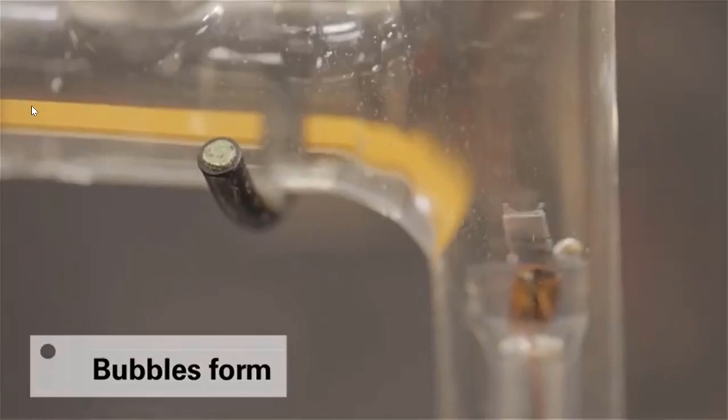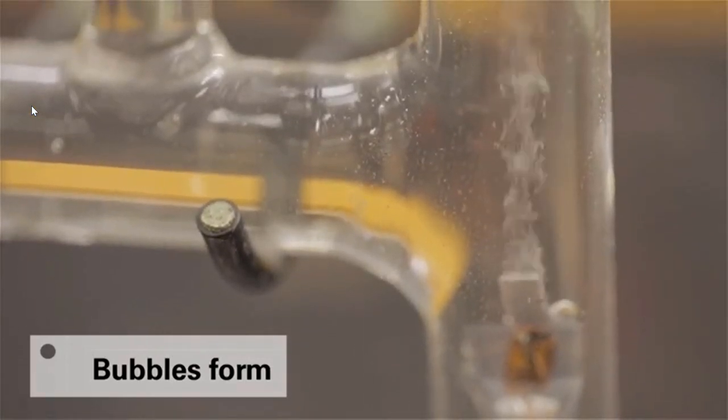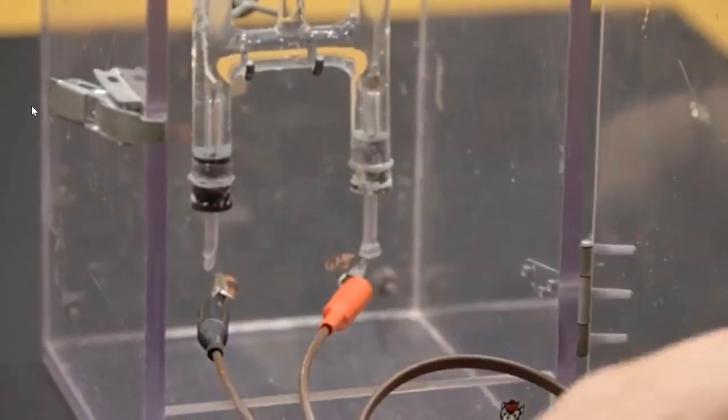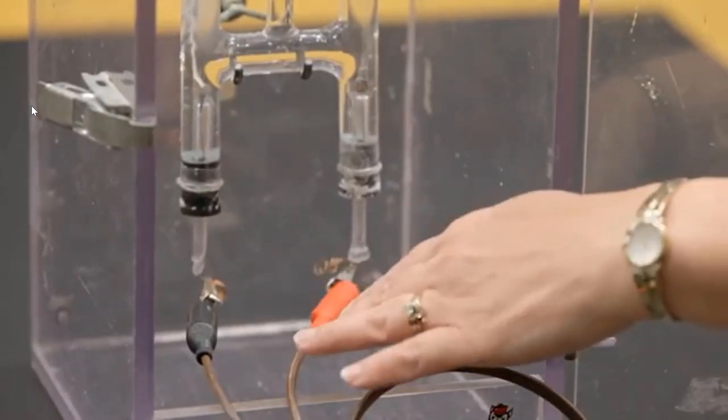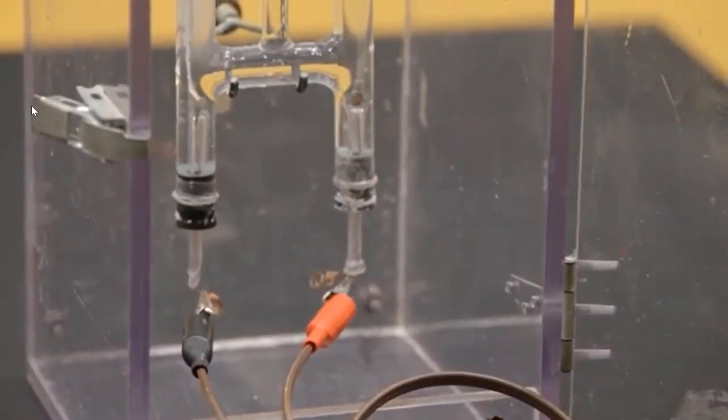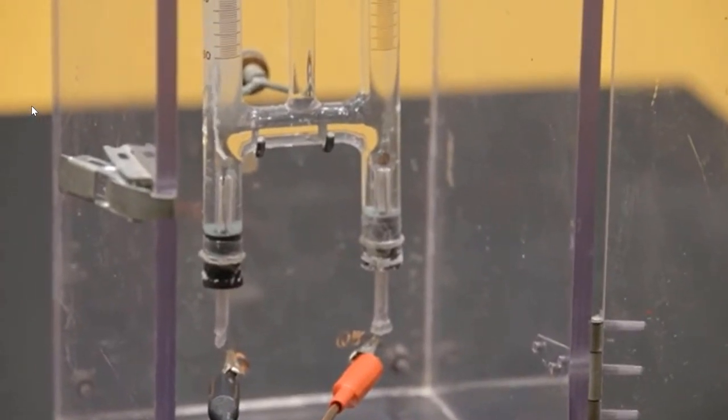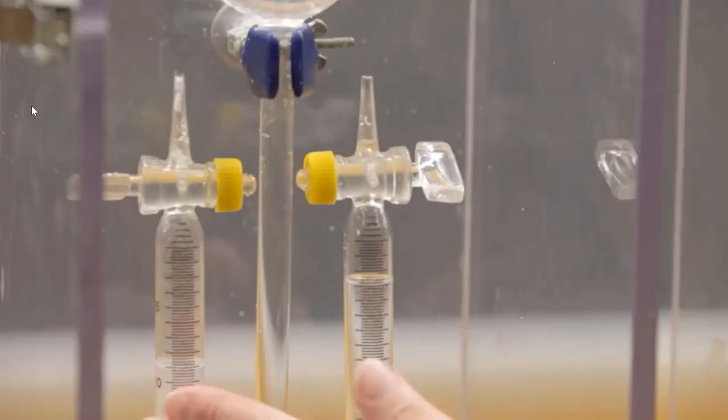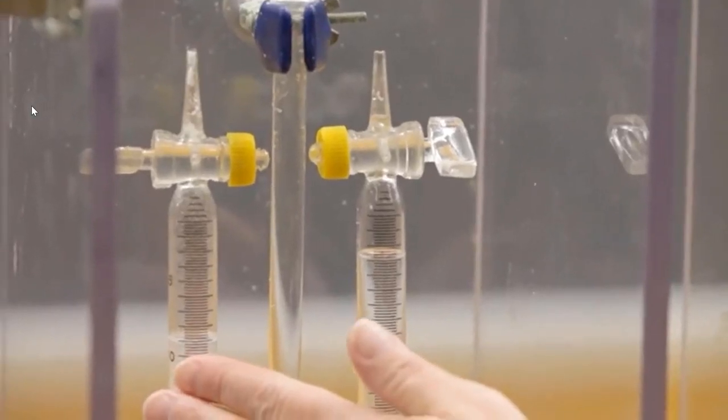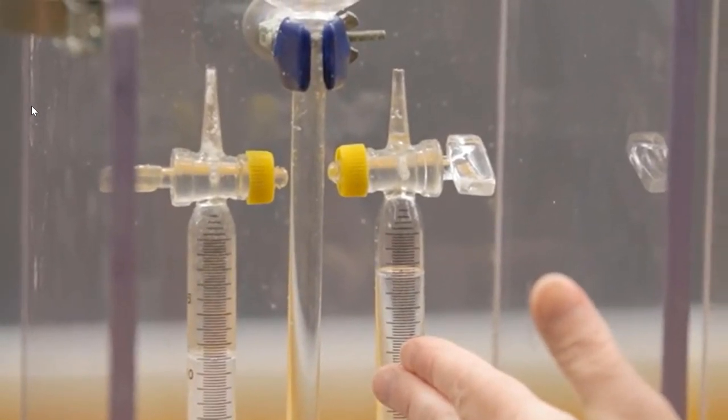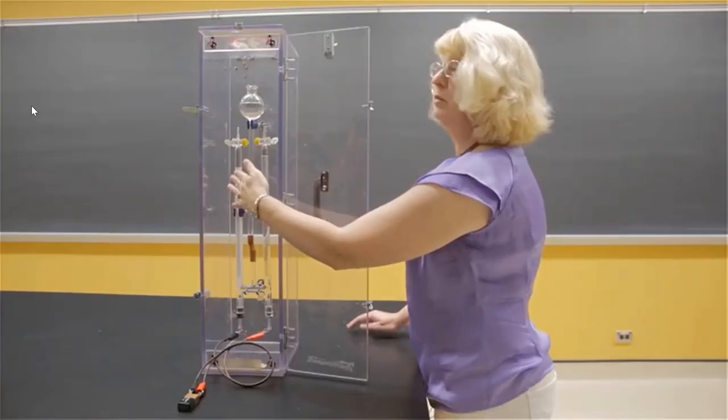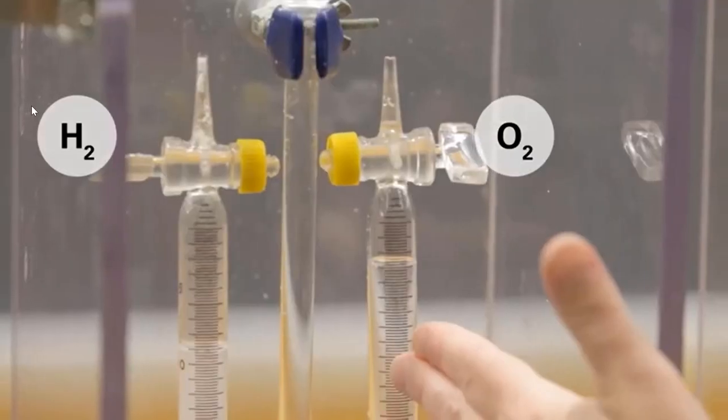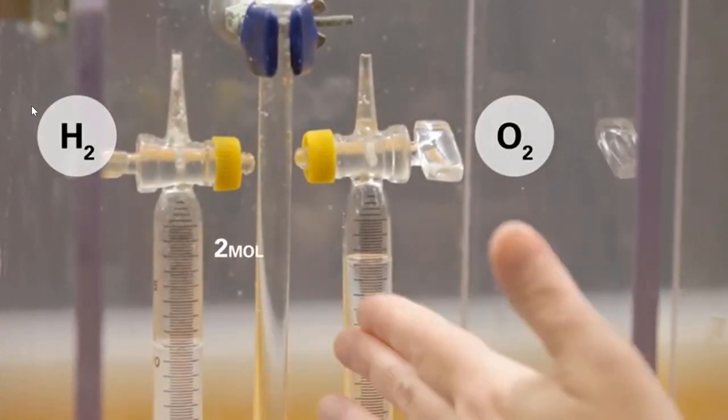And as you can see, bubbles are starting to form. The reaction appears to be more vigorous on the left side with the black cathode than it does on the right side with the red anode. At the completion of the reaction, notice how there is twice the volume of gas on the left burette as there is on the right burette. In the left burette, we have made hydrogen gas, and in the right burette, we have made oxygen gas. The stoichiometry of the reaction is 2 moles to 1 mole.